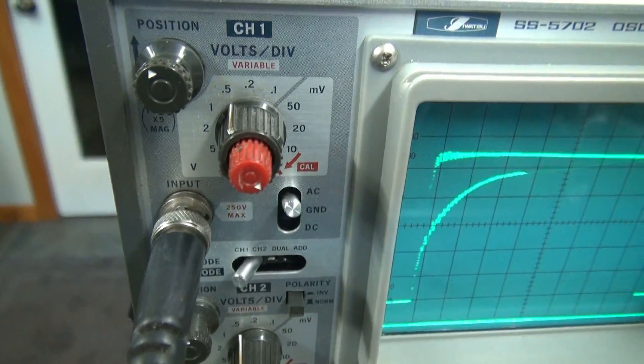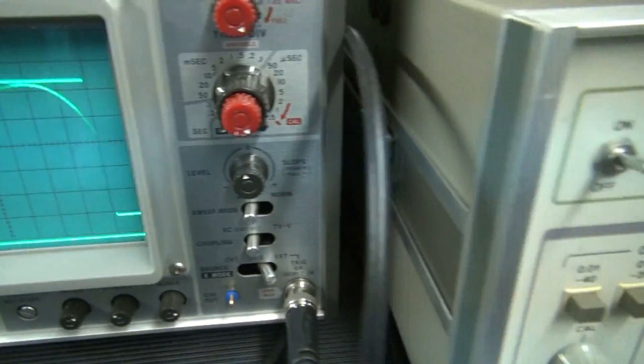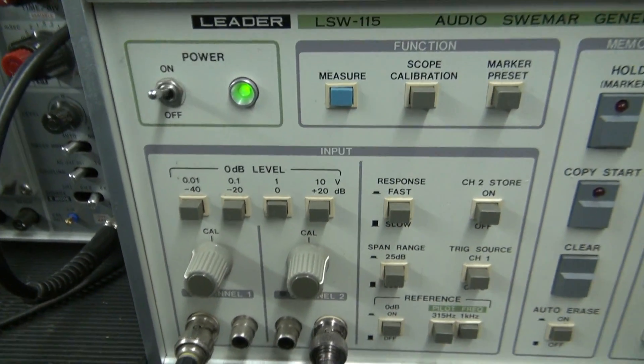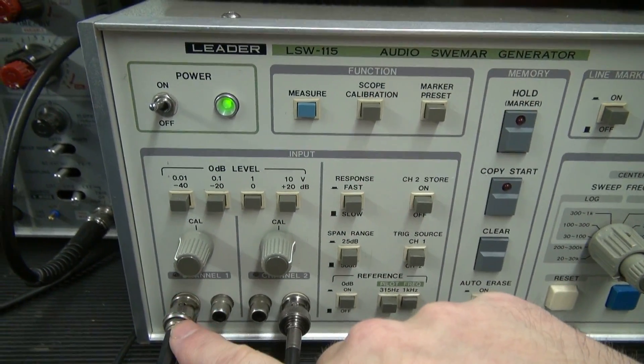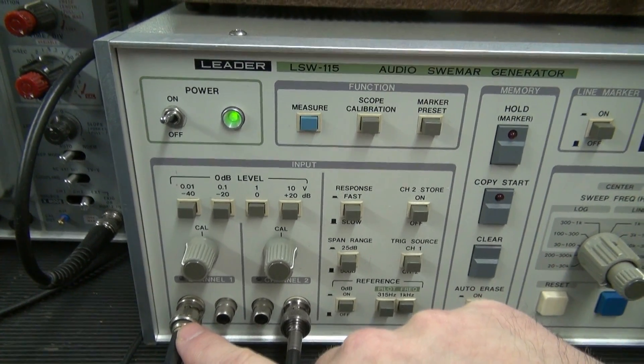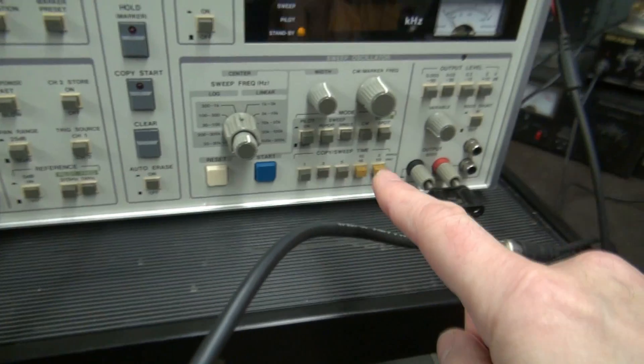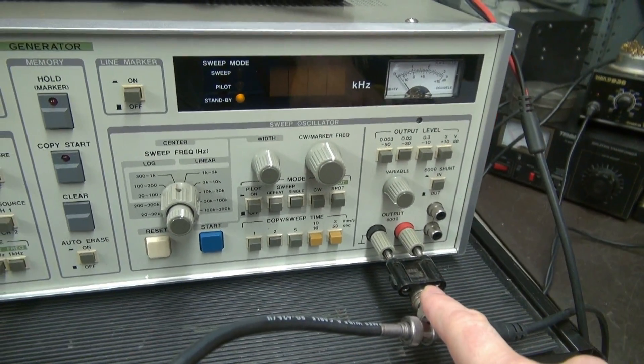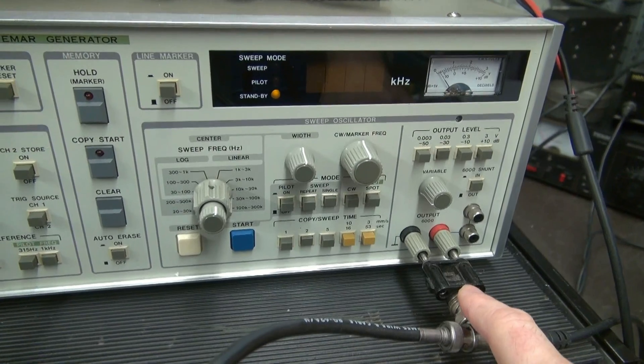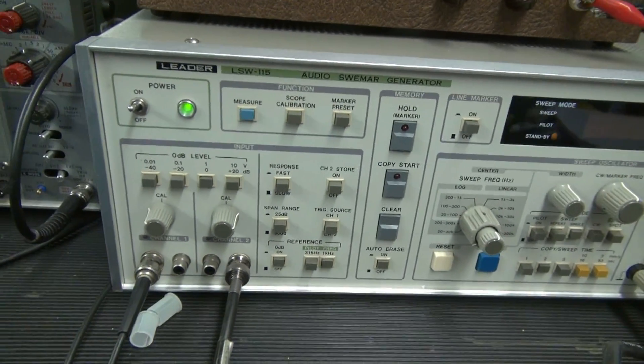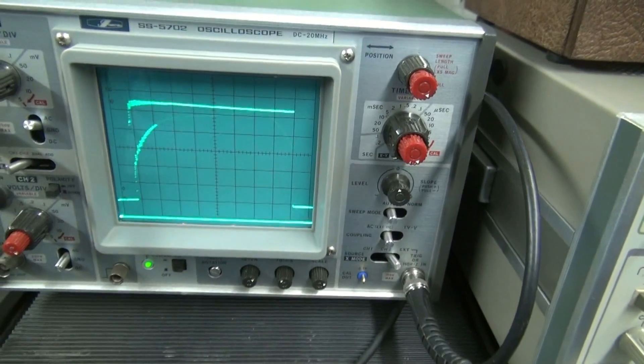And then up here, you use channel 1 for your vertical input. These signals come off the Swee-mar after it performs a sweep. So what you do is we're using channel 1, and that is actually connected to the output of the amplifier. Channel 2 is actually monitoring the signal coming off the Swee-mar, which should be a perfect 20 to 30 kHz signal. So it gives you a direct comparison of what you're sending in to what you're getting out of the amp. And then you just monitor it on the scope.